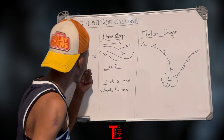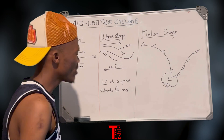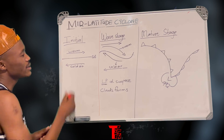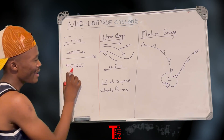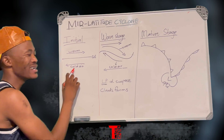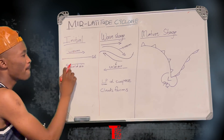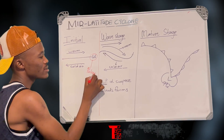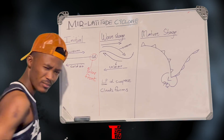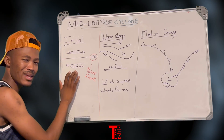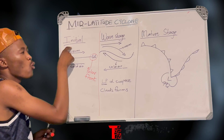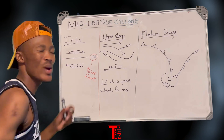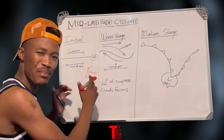In the initial stage, this arrow represents the warm westerly winds and this arrow represents the cold polar easterlies. The two air masses meet at 60 degrees latitude in a region we refer to as the polar front. The cold polar easterlies meet with the warm westerlies at the polar front. It is important to note that the two air masses do not mix and they remain separate from each other during the initial stage.